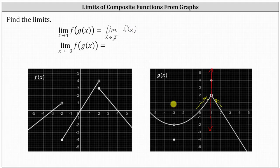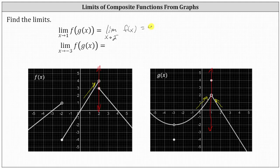We now find the limit as x approaches two from the left of f(x) on the graph. Approaching x equals two from the left side only, we approach the y-value of four. This gives us our limit: the limit as x approaches one of f(g(x)) equals four.